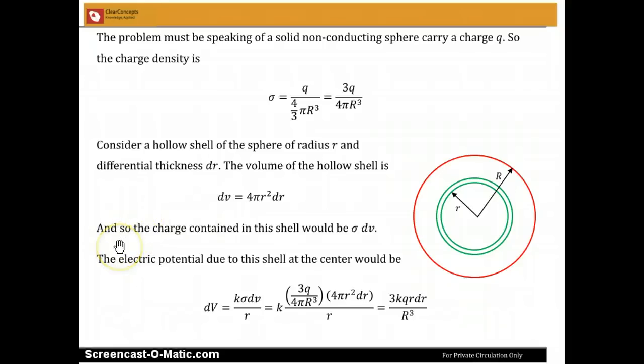And so the charge contained in the shell would be σ dv, the charge density times the volume. The electric potential due to this shell at the center from the previous slide would be dV equals k σ dv by r. And plugging in the value of σ from here and dv from here, and simplifying, we get 3kq r dr by R³.